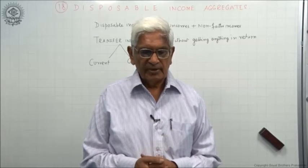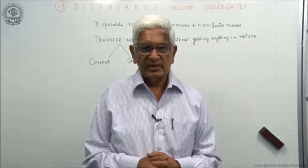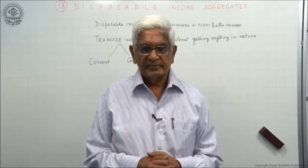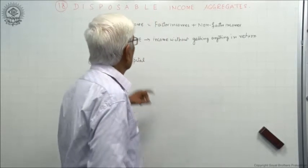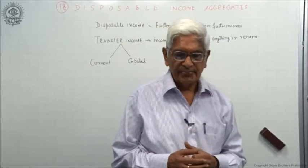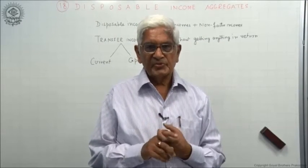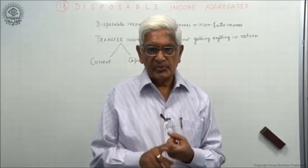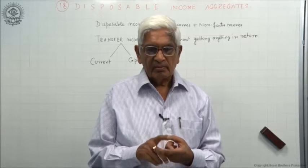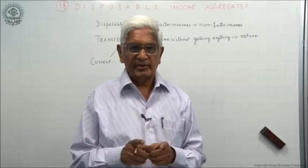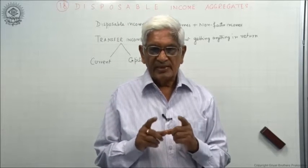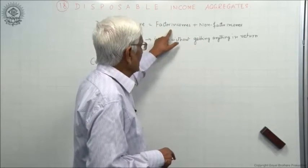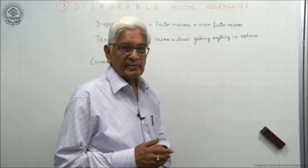So far we have done national income aggregates. Now we go a step further and take up disposable income aggregates. What is the difference between the two — national income and disposable income? National income is the sum of factor incomes, while disposable income is the sum of both factor incomes and non-factor incomes.